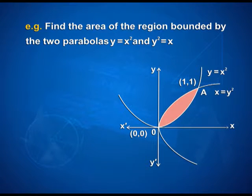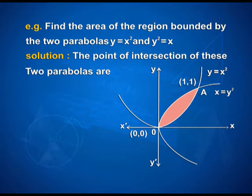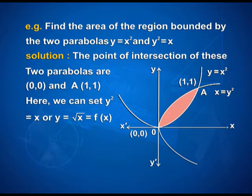Now let us look at one more interesting example. Find the area of the region bounded by the two parabolas y is equal to x squared and y squared is equal to x. For the solution, the points of intersection of these two parabolas are (0, 0) and (1, 1).